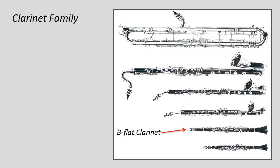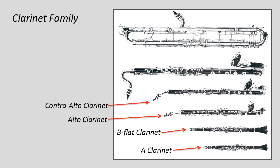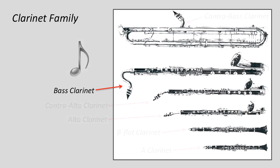The slightly smaller clarinet is the A clarinet, which plays a little higher. If we go a little larger, we have the alto clarinet, and then larger than that is the contra alto clarinet. Next is the bass clarinet, and even larger than that is the contra bass clarinet. That's a lot of clarinets to choose from. Let's listen to the bass clarinet.